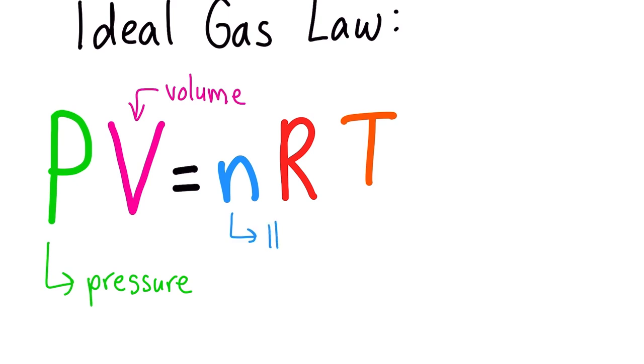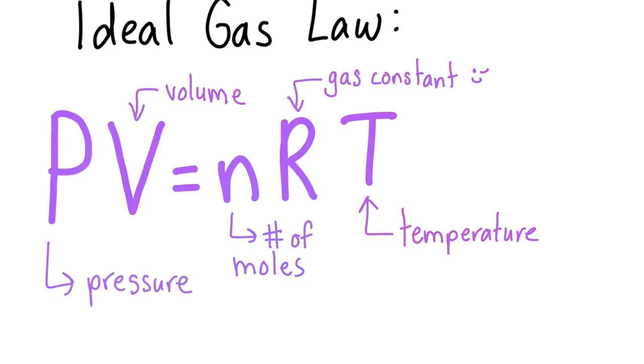P is the pressure that the gas is at. V is the volume of the container that the gas has available to it. N is the number of moles of gas in that container. R is a constant that people put in to make sure that all the units match up. And T is the temperature of the gas.